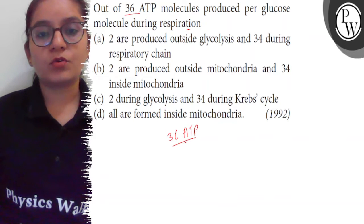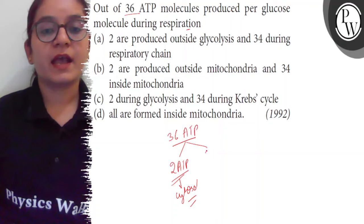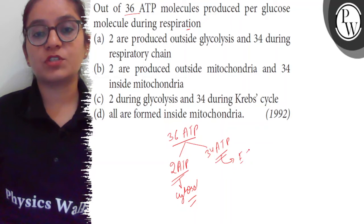molecules are produced, out of which 2 ATP molecules are produced during glycolysis in the cytosol (cytoplasm), that is outside the mitochondria. The rest, 34 ATP molecules, are produced during the electron transport chain in mitochondria.